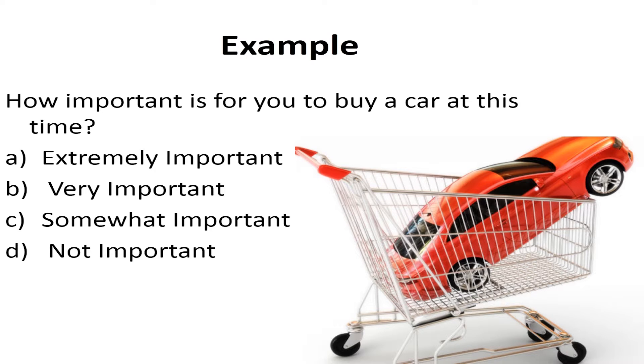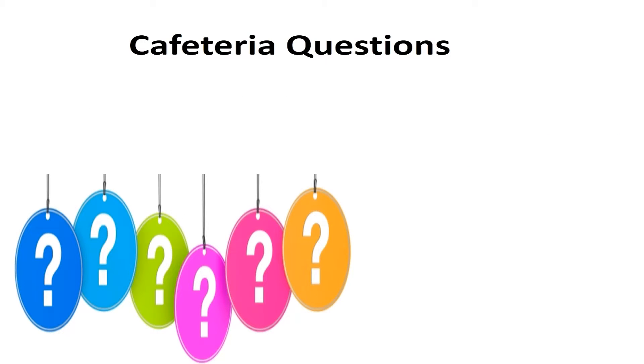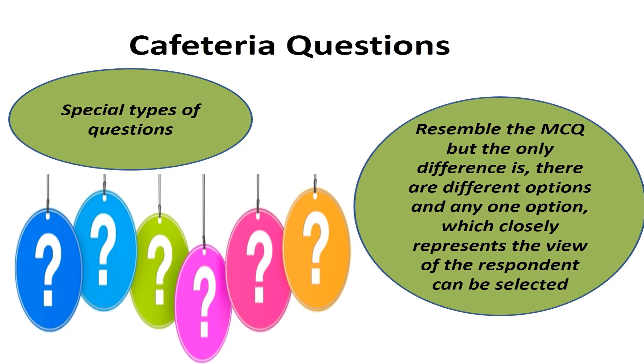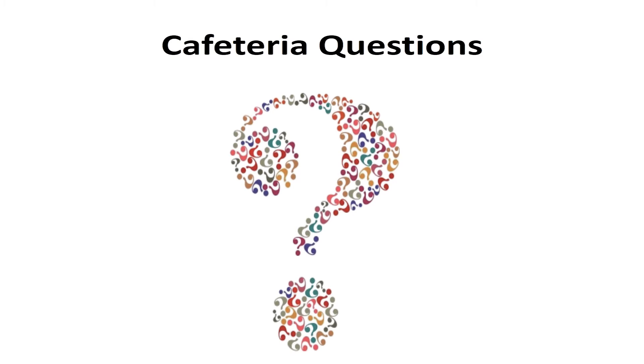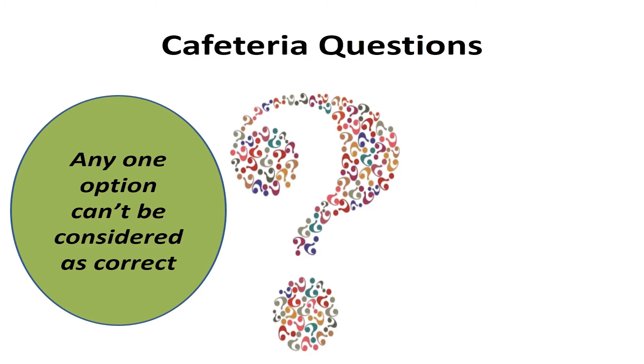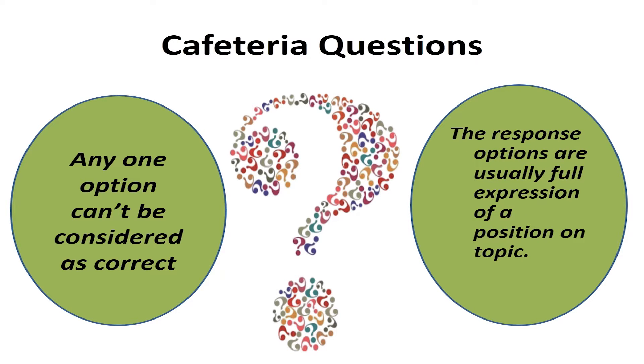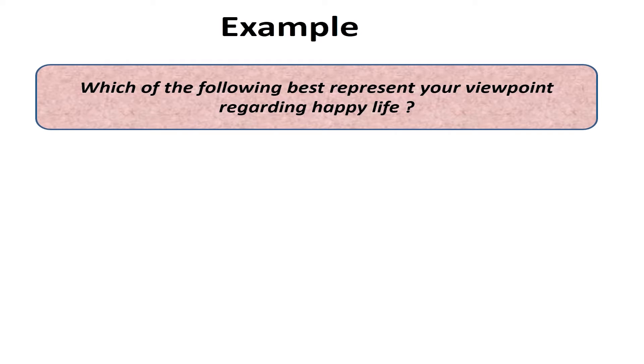The next type of questions are cafeteria questions. These are special type of questions which can resemble the multiple-choice questions, but the only difference is that there are different options and any one option which is closely representative of the view of the respondent can be selected. So here we cannot consider any one option as correct.